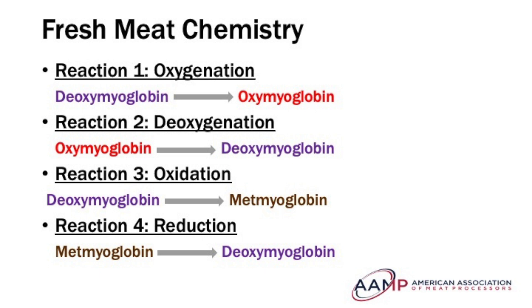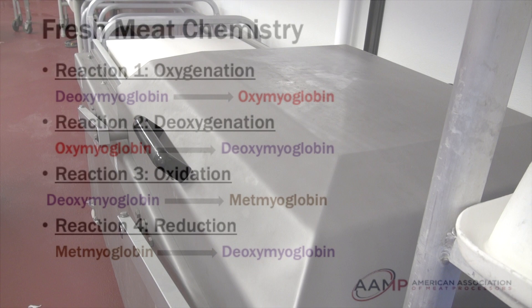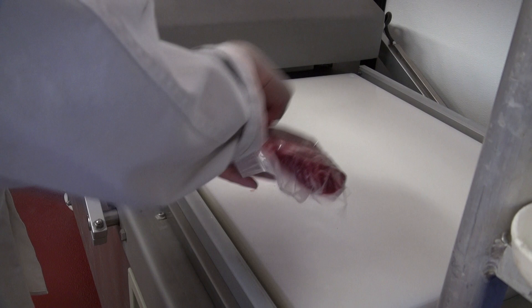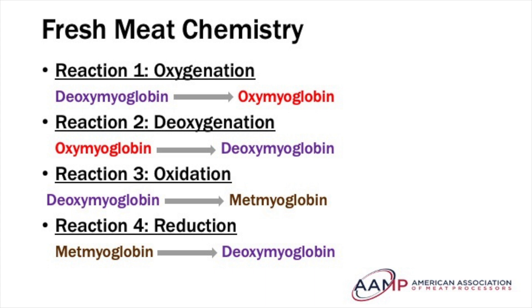Reaction two is called deoxygenation. This is the conversion of oxymyoglobin to deoxymyoglobin. Deoxygenation is the removal of oxygen from a system — for example, in vacuum-packaged products. This reaction also occurs as a result of muscle cells consuming dissolved oxygen within the muscle tissue, but this is highly dependent on time and temperature.